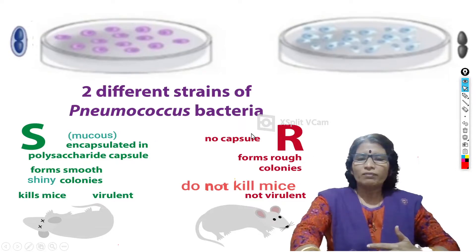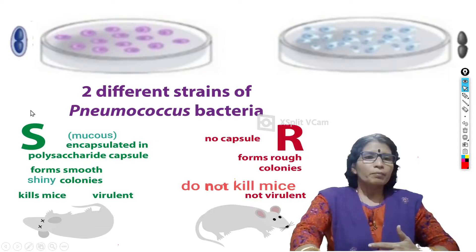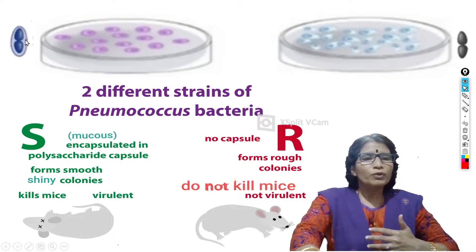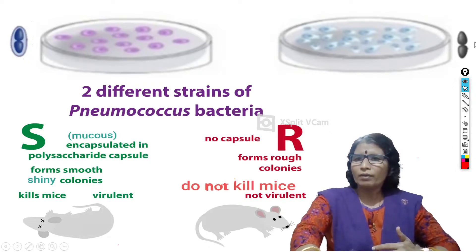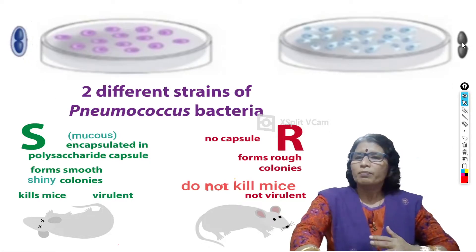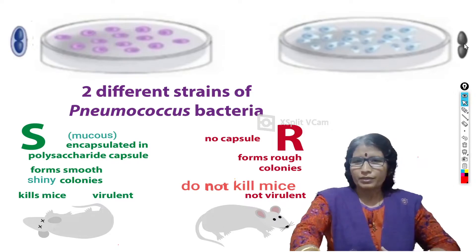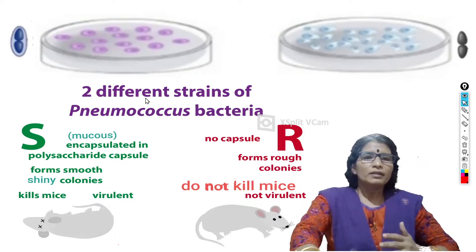One is S, meaning smooth variety, and the other is R, meaning rough variety. In smooth varieties, a mucous membrane is present around the bacteria. This mucous membrane is made up of polysaccharides. Around rough bacteria, the mucous membrane is absent. That is why these names have been given.